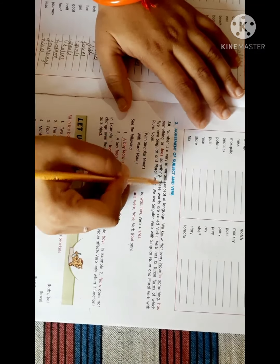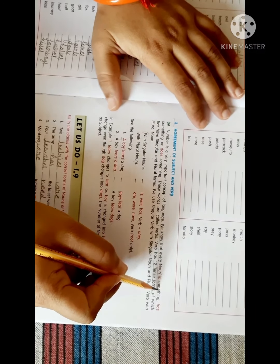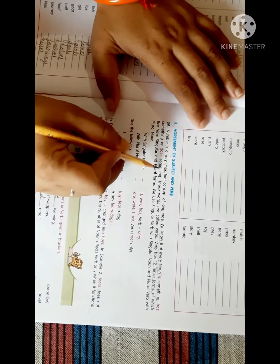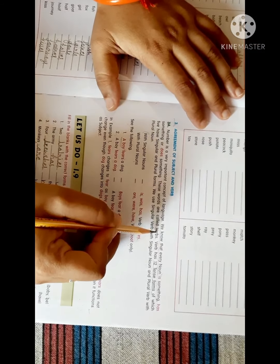Noun is a very important concept of language. We know that every noun is something, has something or does something. These words are called verbs.